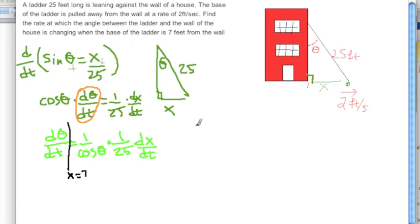If x equals 7, let's redraw this triangle with x equals 7. By the Pythagorean theorem, this side over here is going to be 25 squared minus 7 squared. Remember, the Pythagorean theorem says that this side squared plus this side squared equals this side squared.